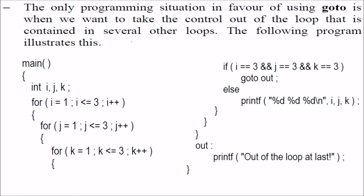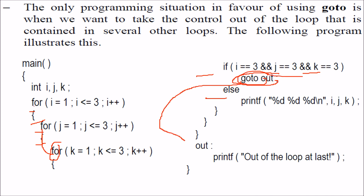There is one situation where goto can be used: when you have multiple levels of nested loops — for inside for inside for with if-else. When you want to come out of all nested loops at once, using break only exits the innermost loop and you are still inside the outer loops. For that scenario, you can use goto to jump completely out of the entire nested construct and print 'out of the loop'.